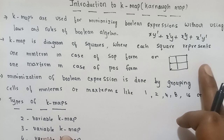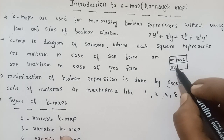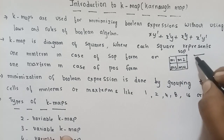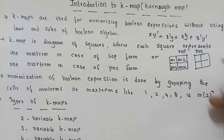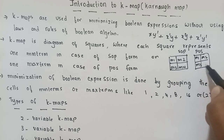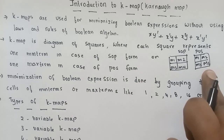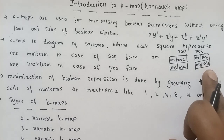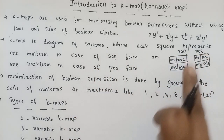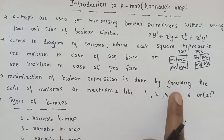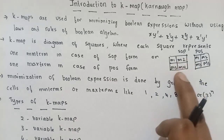If we need sum of products formula in a Boolean expression, we need some min terms. With the product of sum formula in Boolean expression, we need some max terms — capital M1, M2, M3, M4. Minimization of Boolean expression is done by grouping the cells of min terms or max terms.